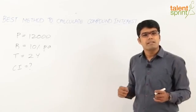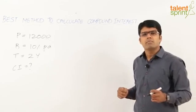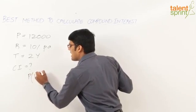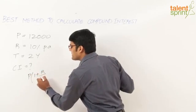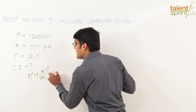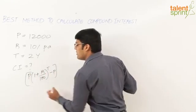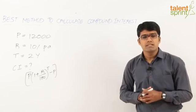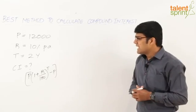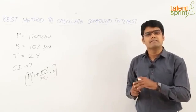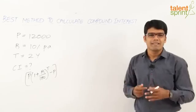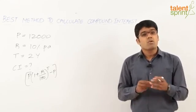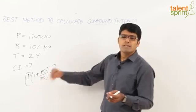The regular or conventional method of calculating compound interest is to use the formula: P into (1 + r/100) raised to the power t, minus P. This is how we can find compound interest using the formula, but as you must be aware, this calculation is a little tedious and we end up wasting a lot of time.